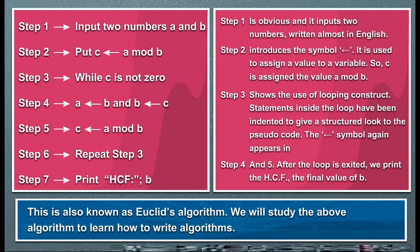Step two introduces the symbol left arrow. It is used to assign a value to a variable, so c is assigned the value a mod b. Step 3 shows the use of looping construct. Statements inside the loop have been indented to give a structured look to the pseudocode.